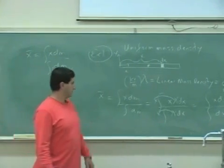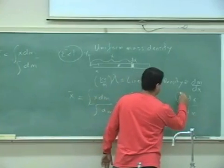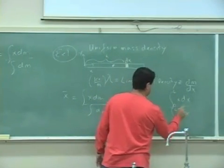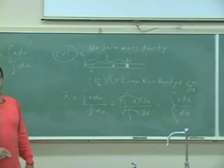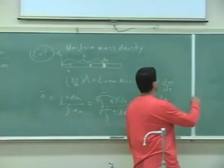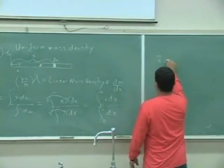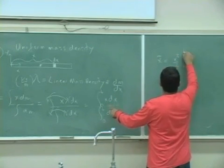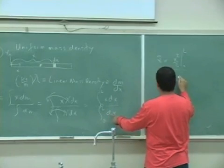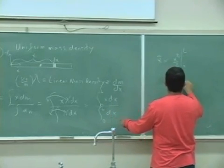And then if I integrate that, what are you going to get? x squared over 2, 0 to L, divided by x from 0 to L.